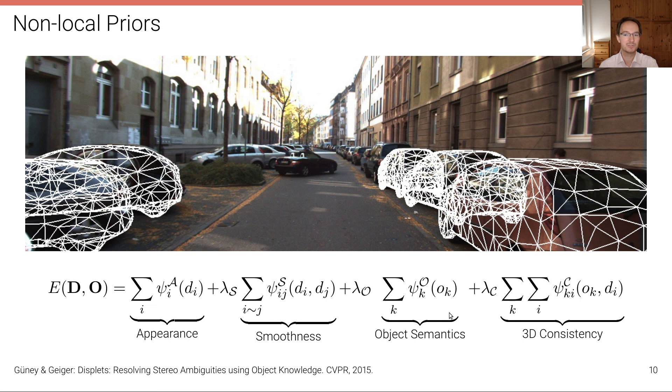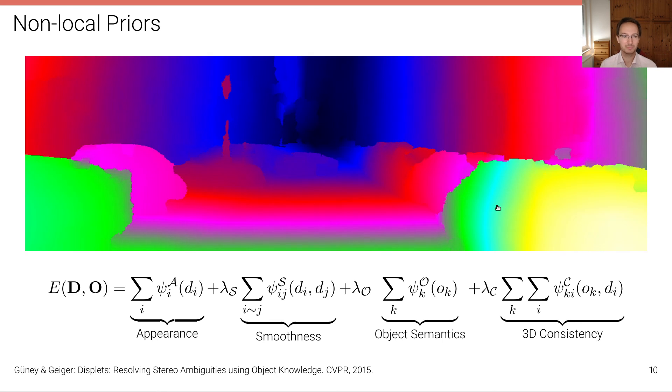And so there's two additional terms added here. There is a semantics term that tries to make the semantics of these inferred objects similar to semantics that have been inferred from the image. And then there's a consistency term that tries to make the 3D objects that have been inferred consistent with the disparity map. And now by integrating this object-level prior knowledge, we can further regularize the problem, and we can get a solution like this here. You can see it's not perfect, particularly at the boundaries, but these gross outliers at the reflections have been now taken into account by this object-level knowledge.